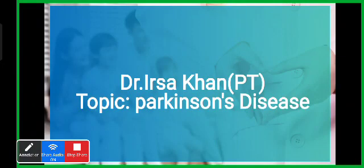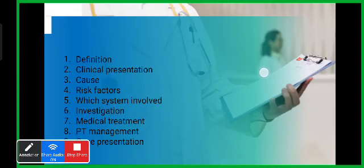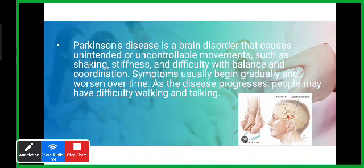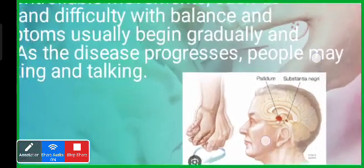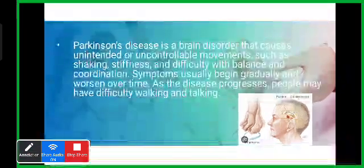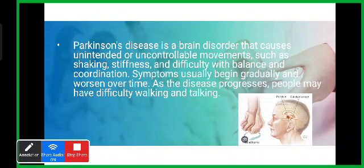Now we are going to discuss Parkinson's disease. Parkinson's disease is a neurological and neurodegenerative disorder. This disease affects the nervous system in which neurons present in the substantia nigra — a part of the brain — become degenerate, especially dopaminergic neurons.